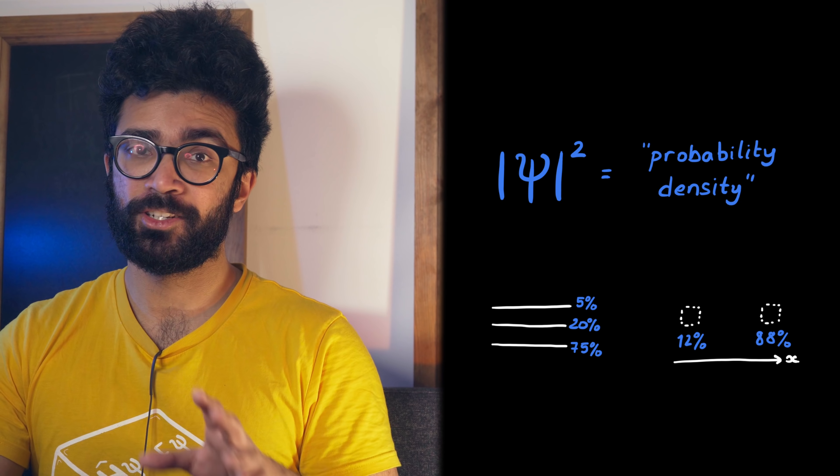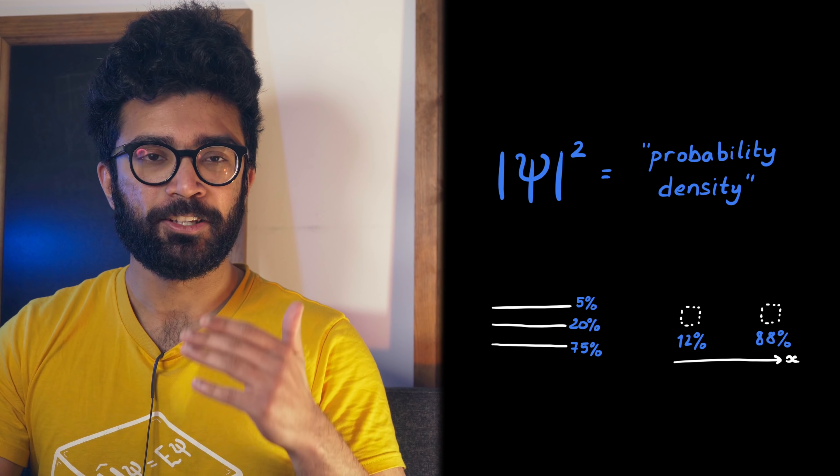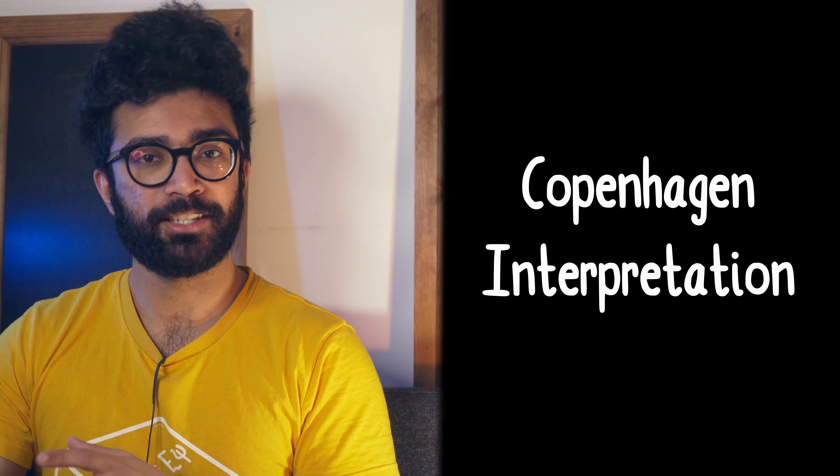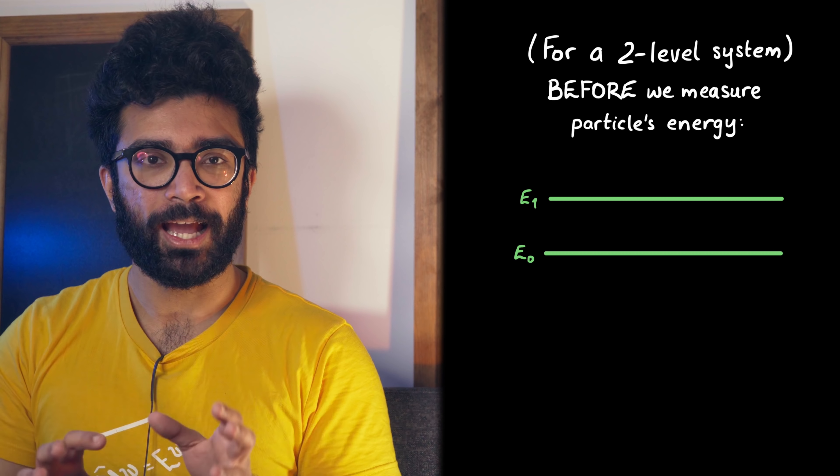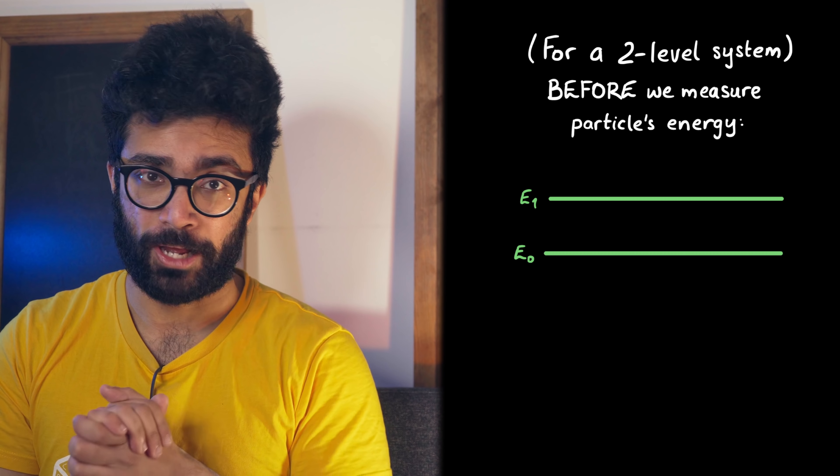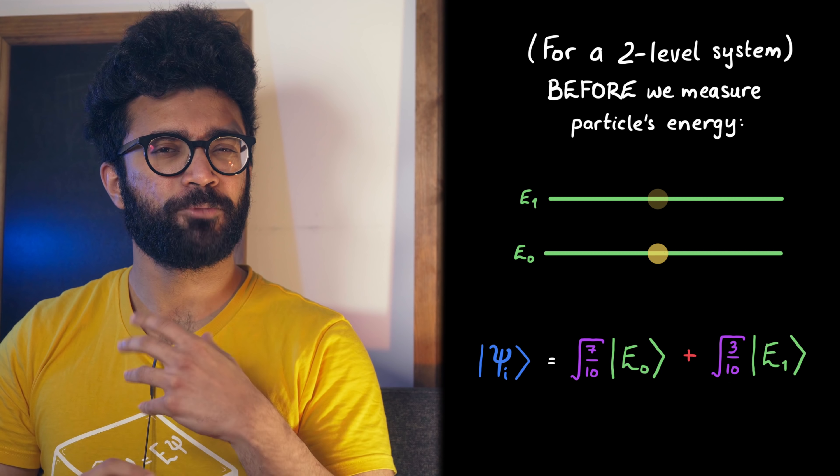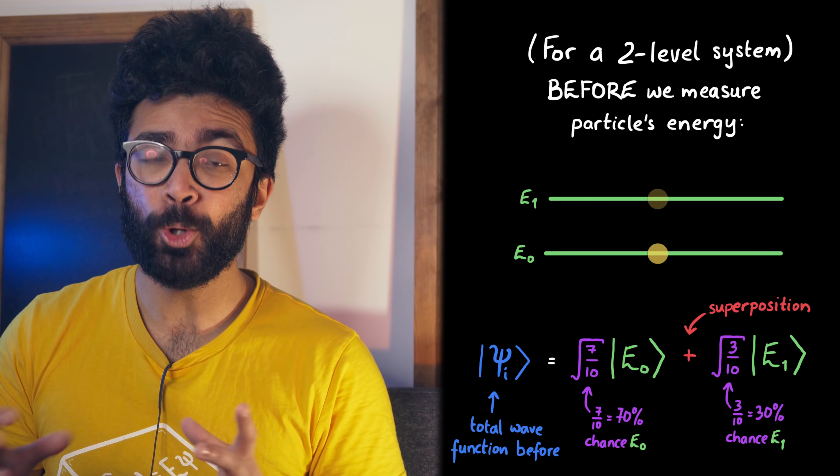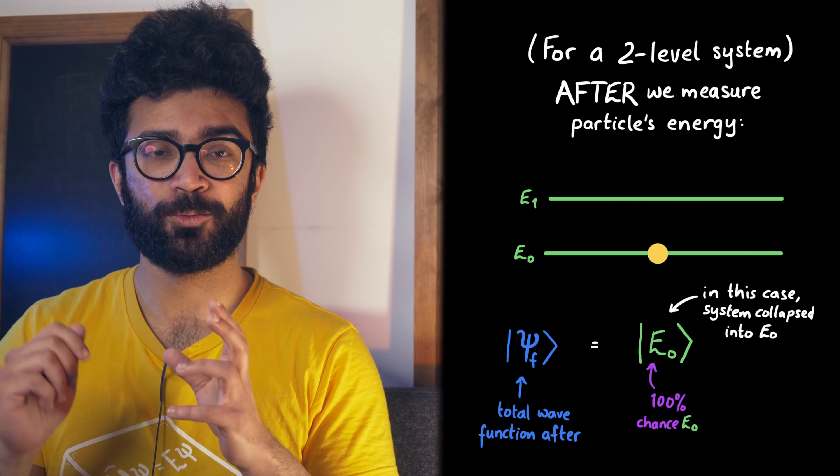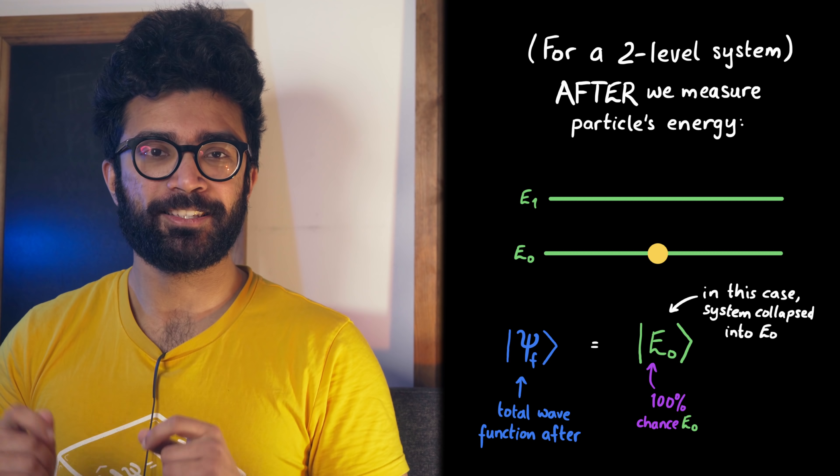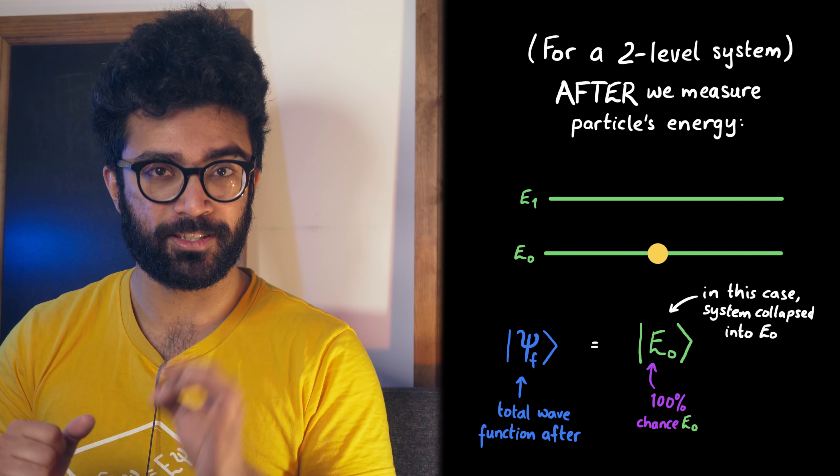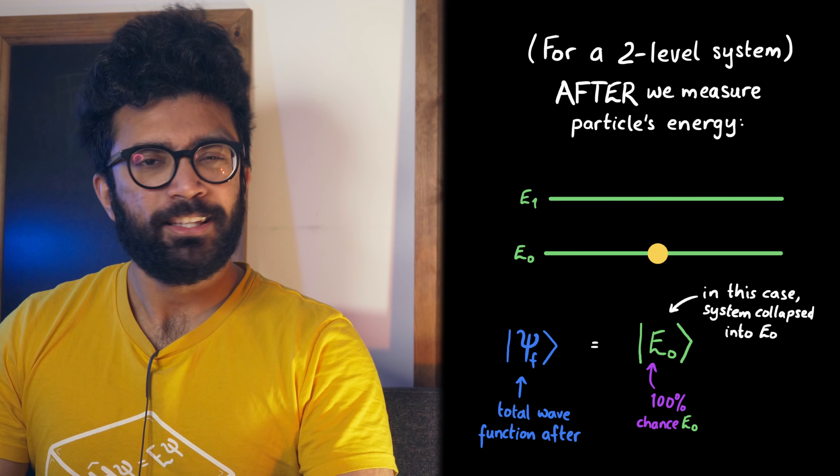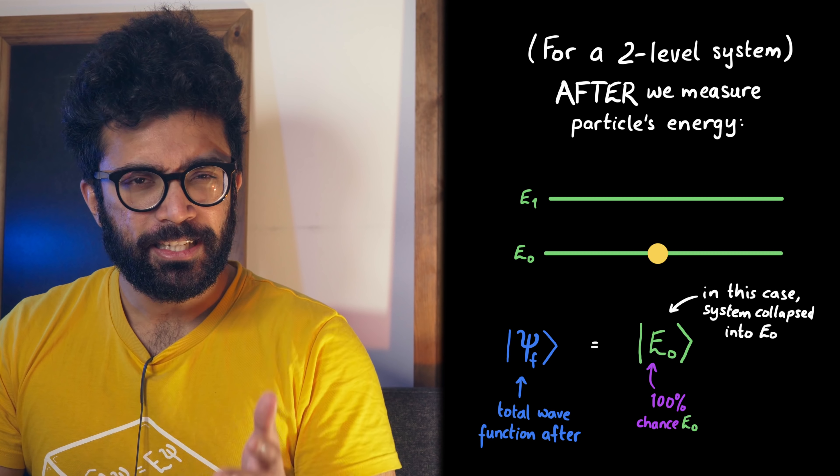Now, the most common interpretation of quantum mechanics these days, known as the Copenhagen interpretation, suggests that before we actually make a measurement on our system, the particle is in a sort of superposition or blend of all the possible states it could be found in. And it's only once we make the measurement that the system collapses into one definite state, randomly.